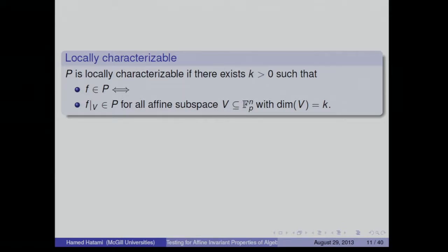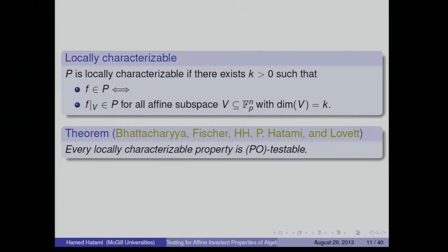More generally, a property is locally characterizable if it is characterized by restrictions to constant-dimensional affine subspaces: there exists a constant k such that if all restrictions of f to subspaces of dimension at most k satisfy the property, then f itself satisfies the property. The main result of the paper by BFHL is that all locally characterizable affine invariant properties are testable — a very powerful generalization of polynomial testing — and this testing is proximity-oblivious with a constant number of queries.